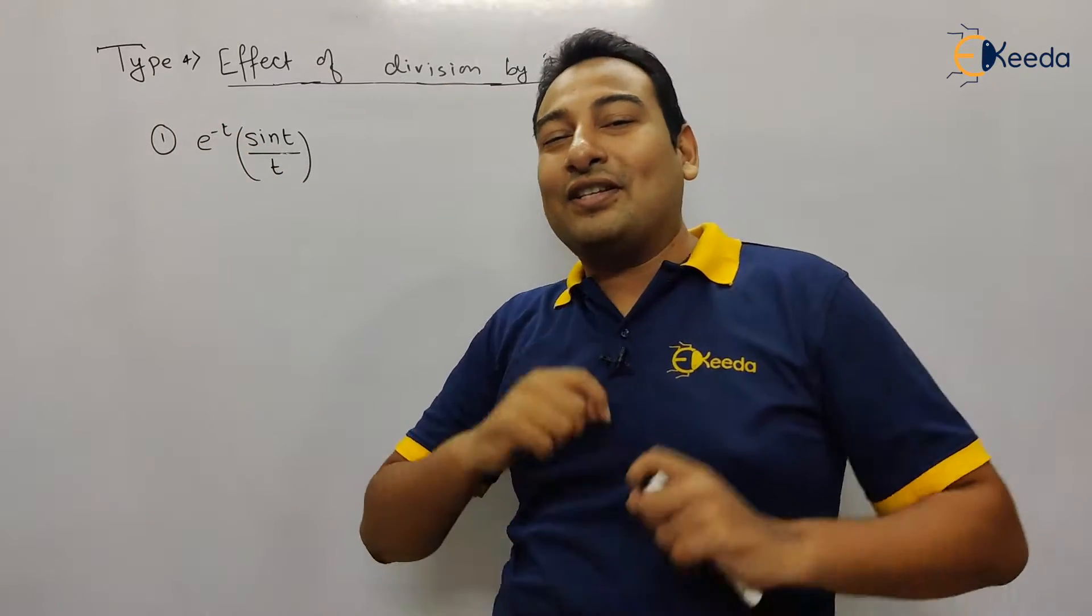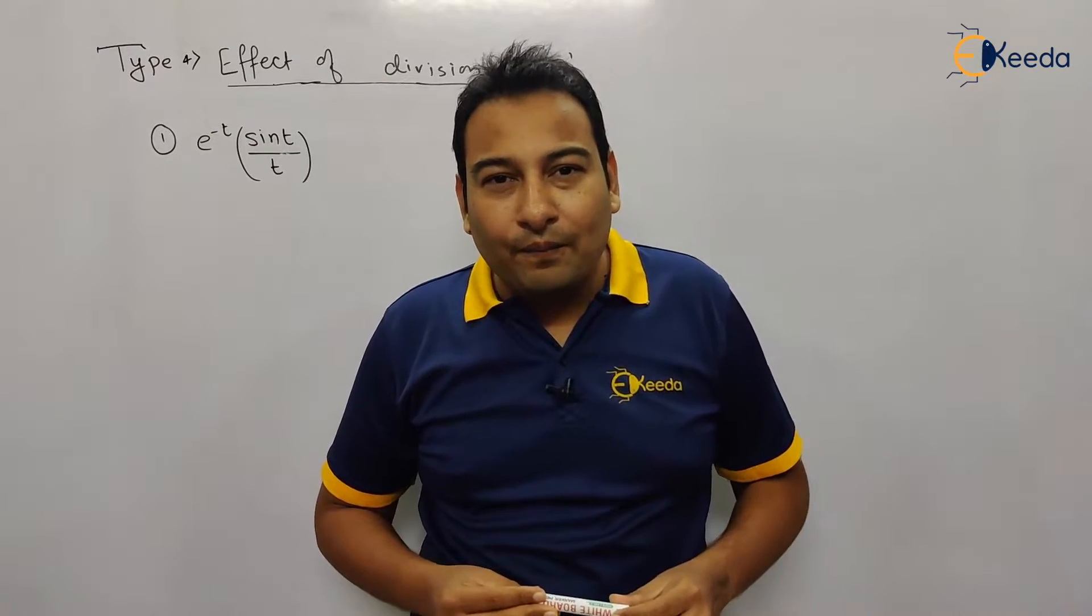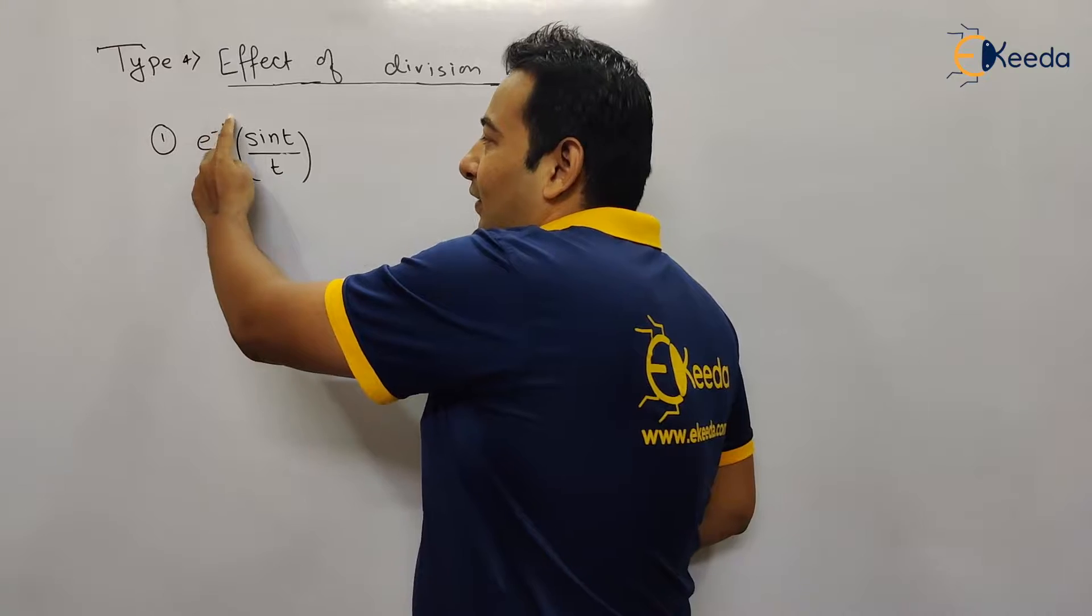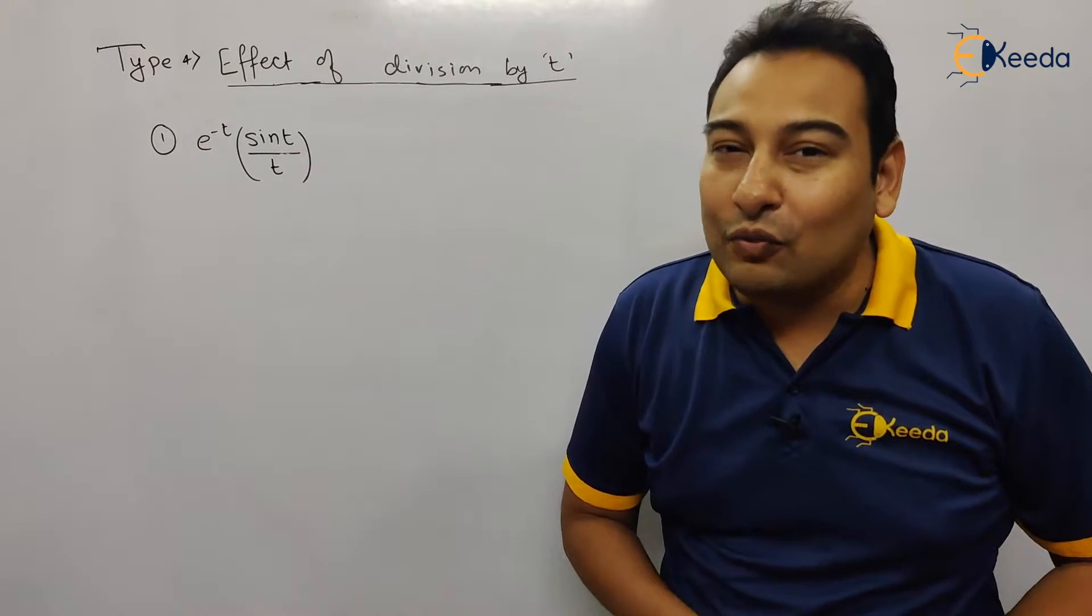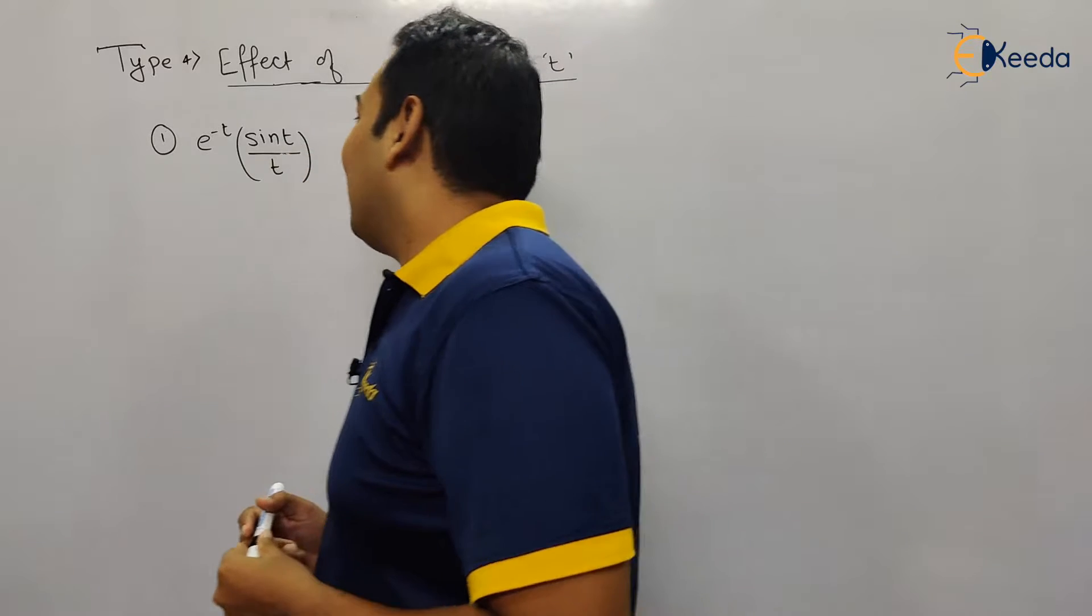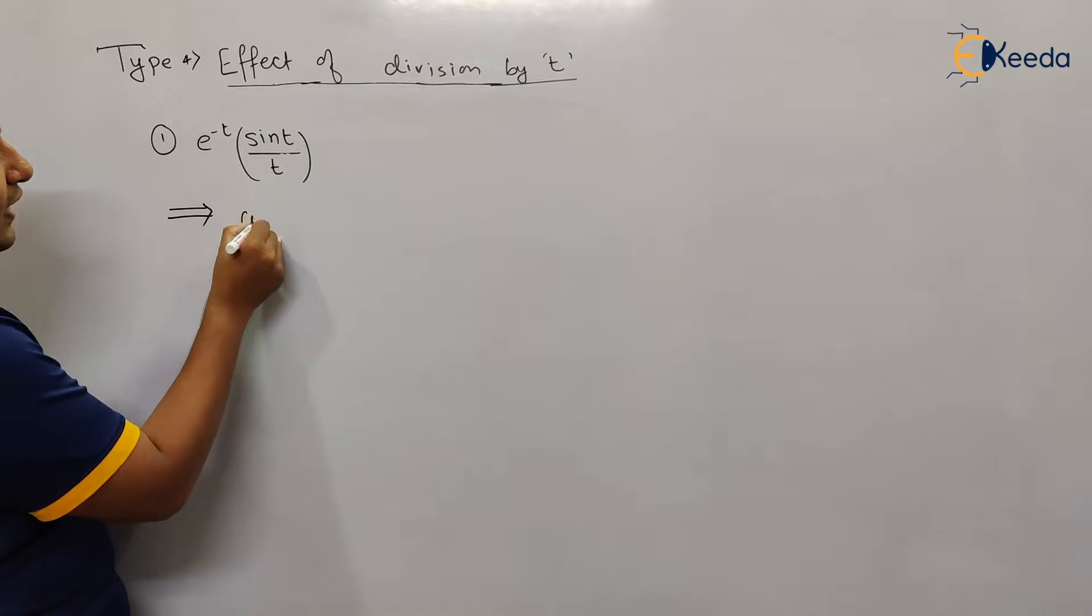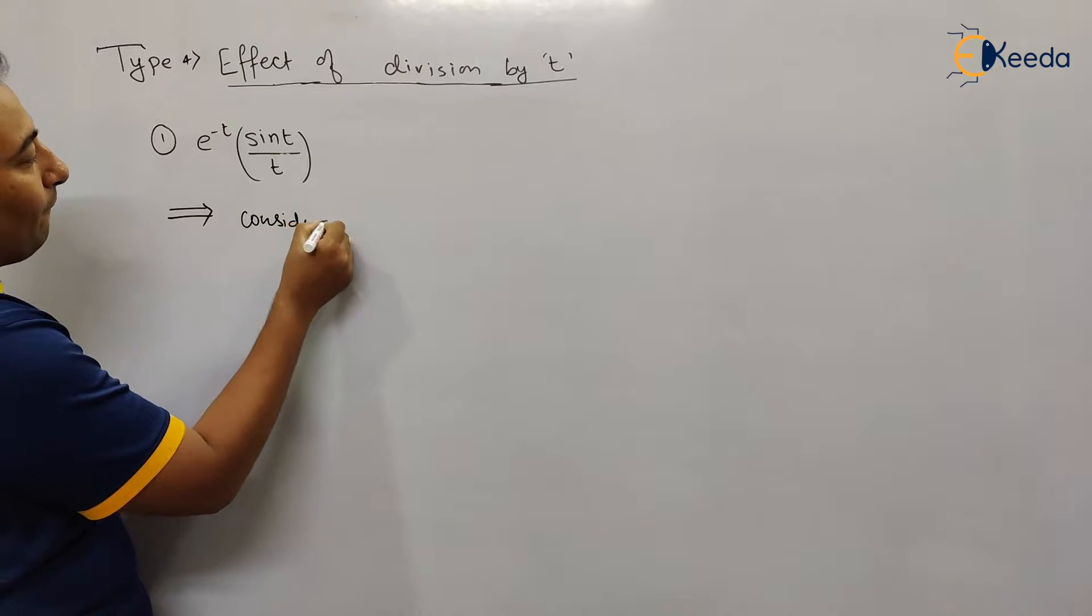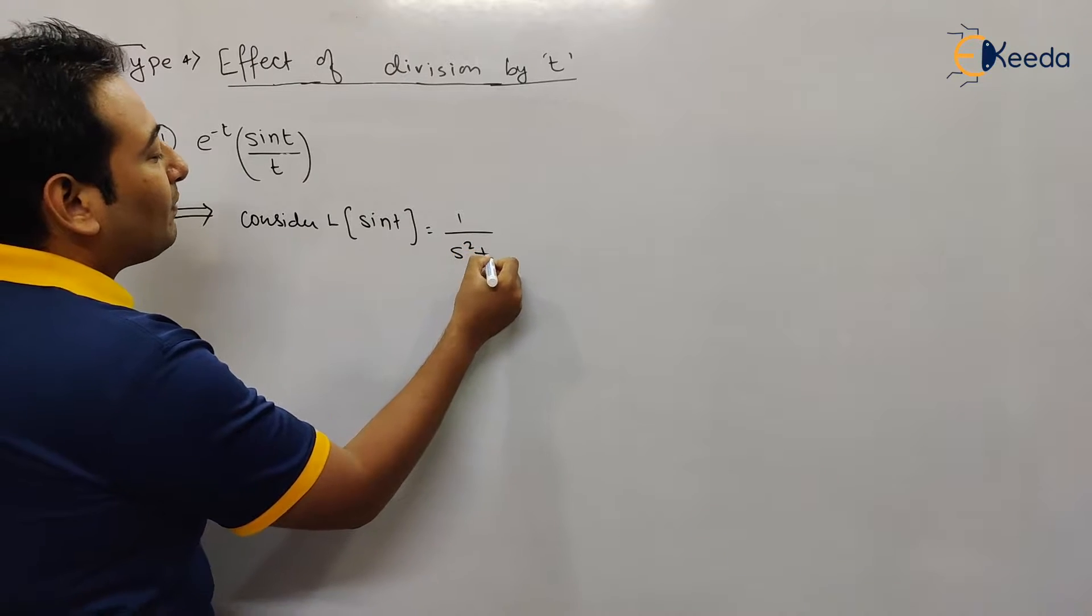That we have discussed number of times. So what is the technique that we follow? Forget about the property, forget about the FSP, forget about the division by t. Then you are left with what? You are left with sin t. So let us first of all find out, consider Laplace of sin t. And what is Laplace sin t? 1 upon s square plus 1.